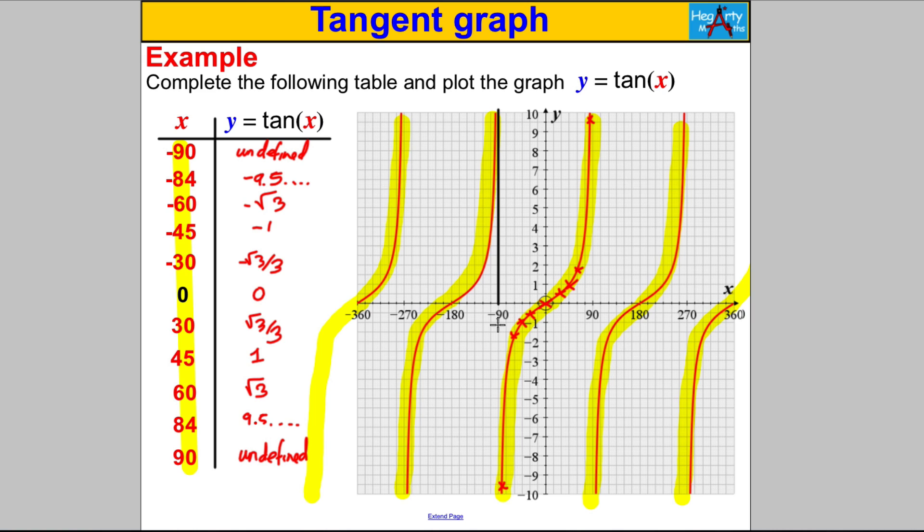In fact, it repeats itself every 180 degrees. So look here at -90, if we draw a line up here and a line down here, whatever happens between -90 and positive 90 repeats itself between 90 and 270, and that has repeated itself between -270 and -90. It repeats itself every 180 degrees like that.